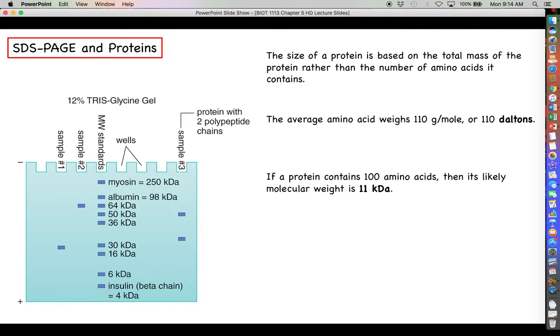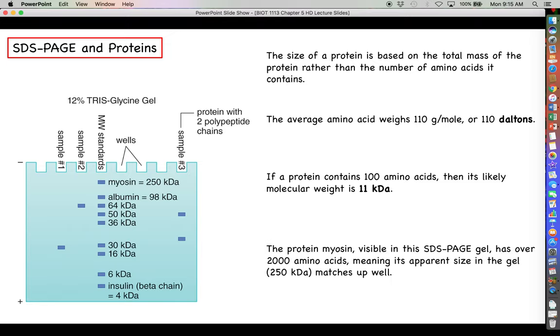If a protein contains 100 amino acids, then just playing the law of averages, it's probably going to have a molecular weight of about 11 kilodaltons, or 11,000 Daltons. 11 times 100 would be 11,000. The protein myosin that you see here, which is visible at the top of the SDS-PAGE gel, because its migration in the gel is about 250 kilodaltons, that probably indicates that that protein has well over 2,000 amino acids, which all seems to make sense. It's a very large protein, so it doesn't migrate very far in the gel.